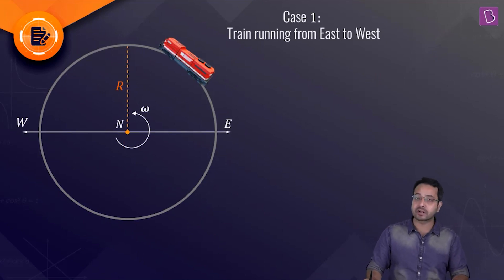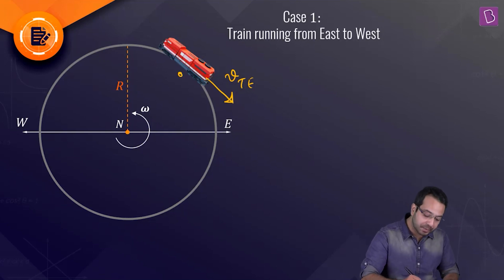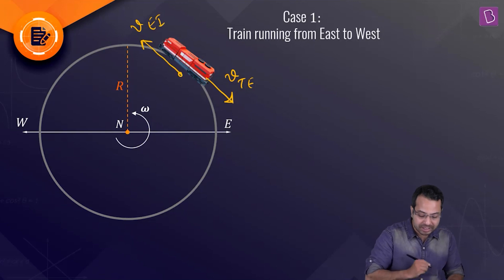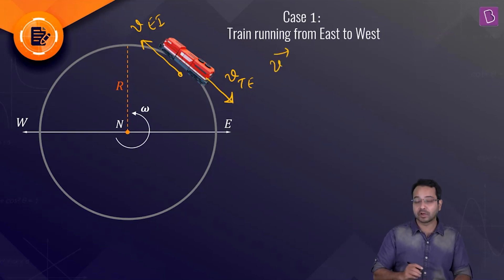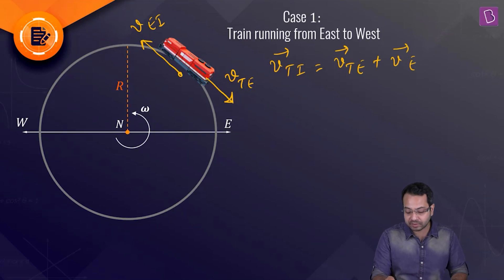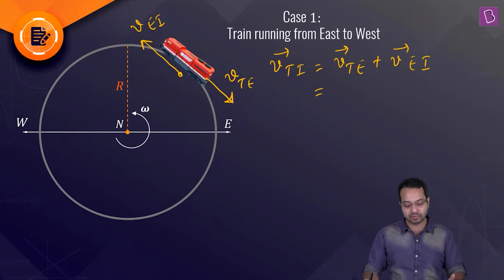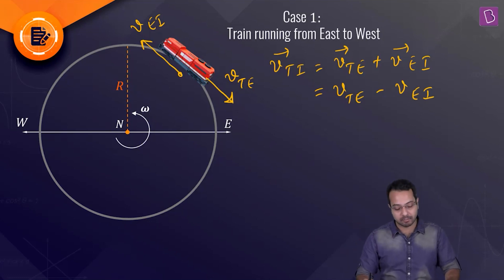In scenario one, train A moves from east to west. The velocity of the train relative to the earth is in the west direction, while the velocity of the earth relative to the inertial frame is in the east direction — they are opposite. Using the relative velocity relation: V_train,inertial = V_train,earth + V_earth,inertial, the magnitudes subtract, giving V1 = V_TE − V_EI.